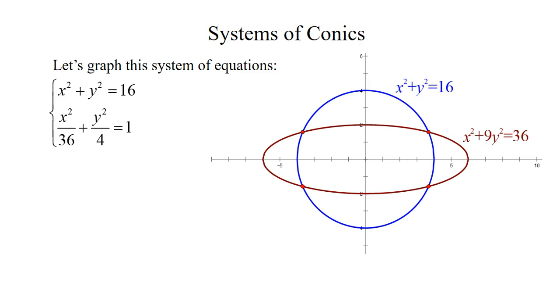For the conic, the ellipse, the center is at the origin. We have a major axis of length 12, which means that we're going to go left and right 6. So we have points at (6, 0) and (-6, 0).